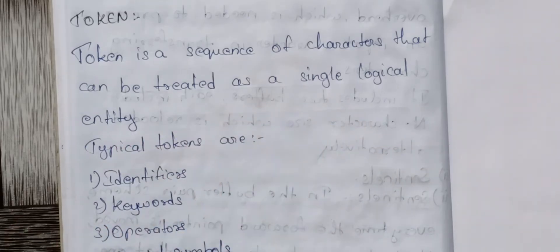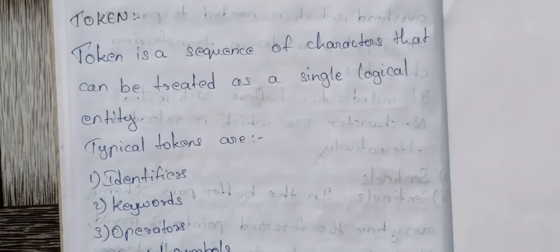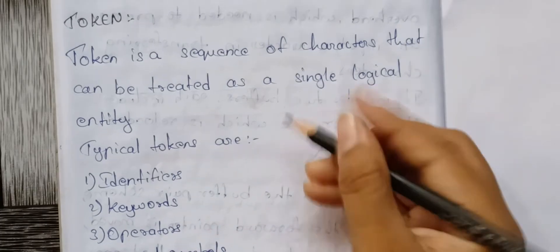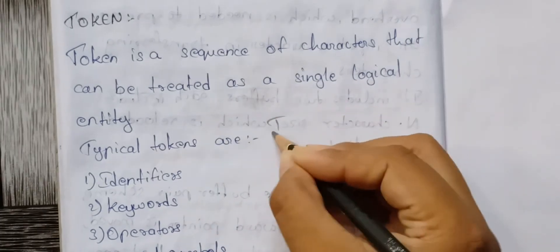So, tokens — it is a sequence of characters. For example, consider the English sentence: 'I am eating.' In English grammar, each word is a token. So, I is a token, am is a token, and eating is a token.